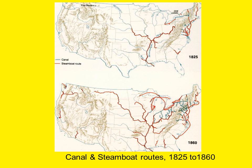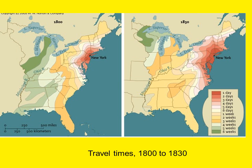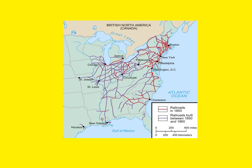This map shows the growth of canal and steamboat routes in the United States between 1825 and 1860. Canal routes are depicted by blue lines and steamboat routes are shown in red lines. The next map shows the dramatic reduction in travel times between New York City and various eastern regions of the United States. Another map shows the growth of railroads by the year 1850, indicated by a red line, and 1860, indicated by a purple line. This decade from 1850 to 1860 was a decade of significant growth in American railroads.